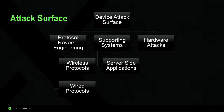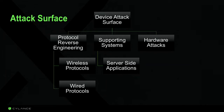Looking at the attack surface: the external device surface covers all interfaces, ports, protocols, services, and any way to get data you control into the device. Hardware attacks cover internal stuff — debug interfaces, ability to dump chipsets via SPI or I2C. Protocol reverse engineering is split into wireless and wired. All supporting systems are in scope: vendor-supplied servers, workstations, monitoring systems, thick-client binaries, and web applications or APIs.